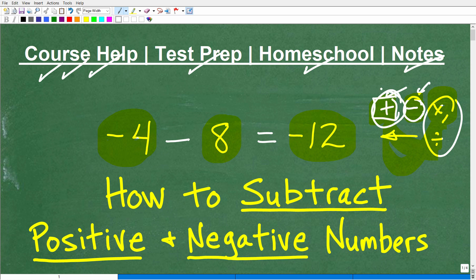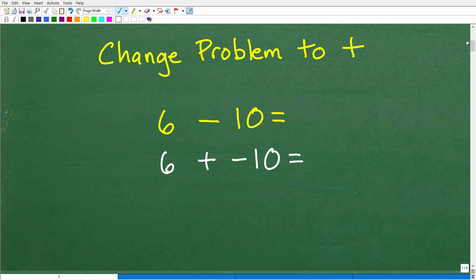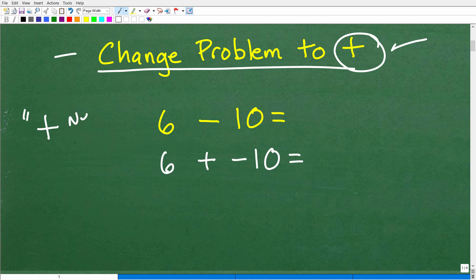Again, disclaimer, you need to know how to already add positive and negative numbers. So, you know, if you're unsure about this little video, what I'm going to be teaching you, go back to the addition and then circle back and re-watch this video. But let's get into it. And I'm going to give you basically the rule that you need to be thinking about here. So, when we're talking about subtracting positive and negative numbers, the key is to change the problem to addition. So all subtraction problems, we're going to change subtraction problems to addition problems. So, how do we do that? Well, we're going to do it with this very famous thing called plus negative, right? So, plus negative, that's the little phrase. And let me show you how it works.